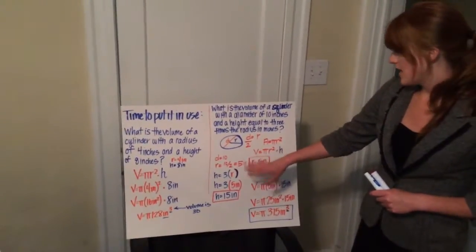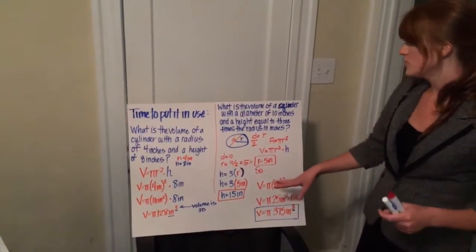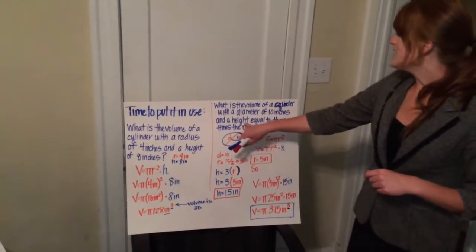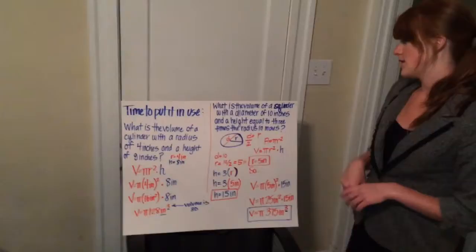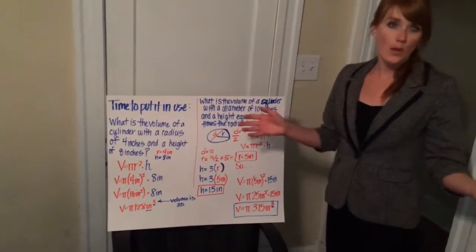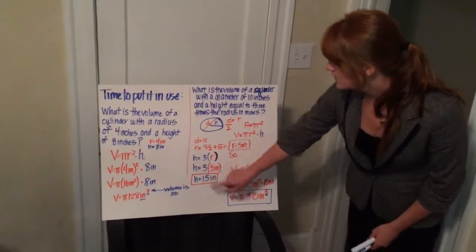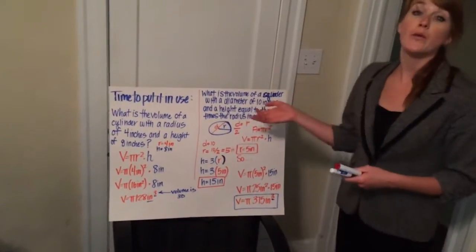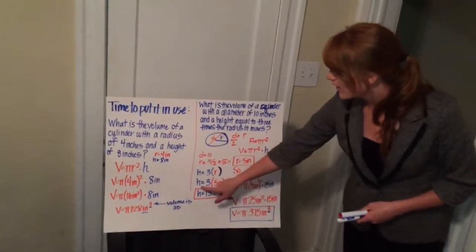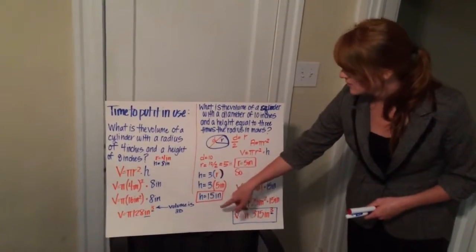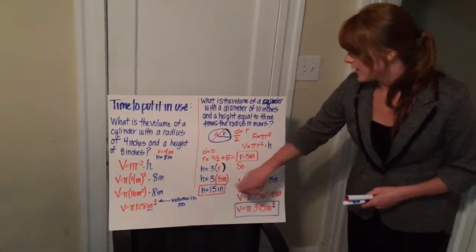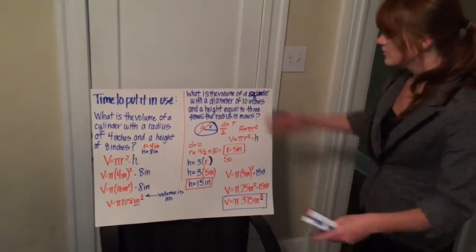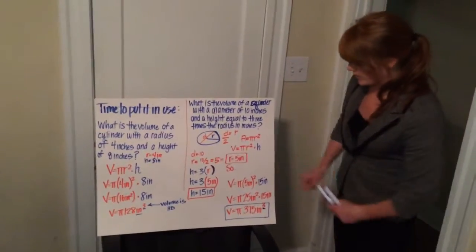Our radius can be plugged into the equation, but first we also need to find our height. Our height is equal to three times the radius in inches. So our height equals three times our radius. We just found out our radius, so let's plug that in: height equals three times 5 inches. So our height is 15 inches. Now let's plug all of that into our volume equation.